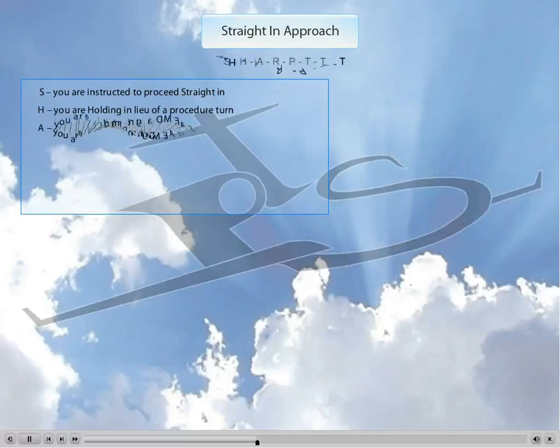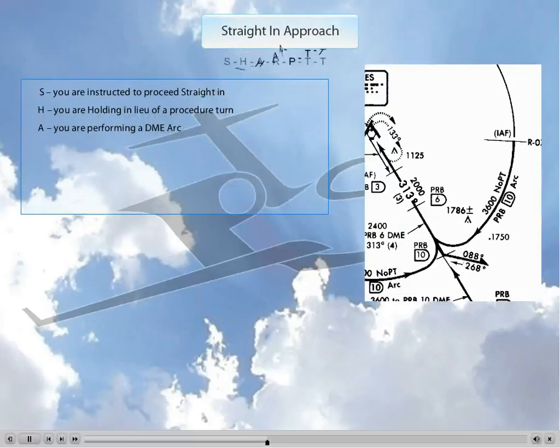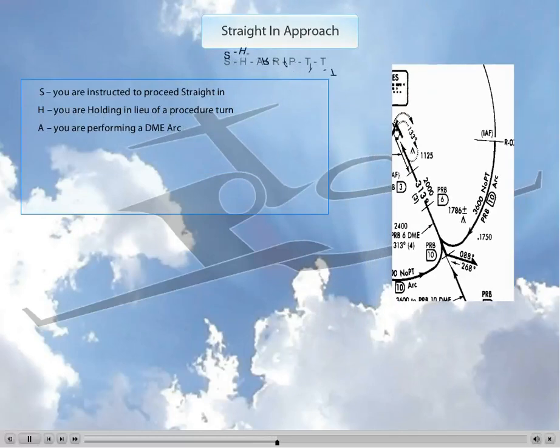The A stands for Arc. If you're doing an arc of DME, an arc to final, you would obviously continue straight in once you reach the final approach fix. Again, this assumes that you have received the approach clearance.